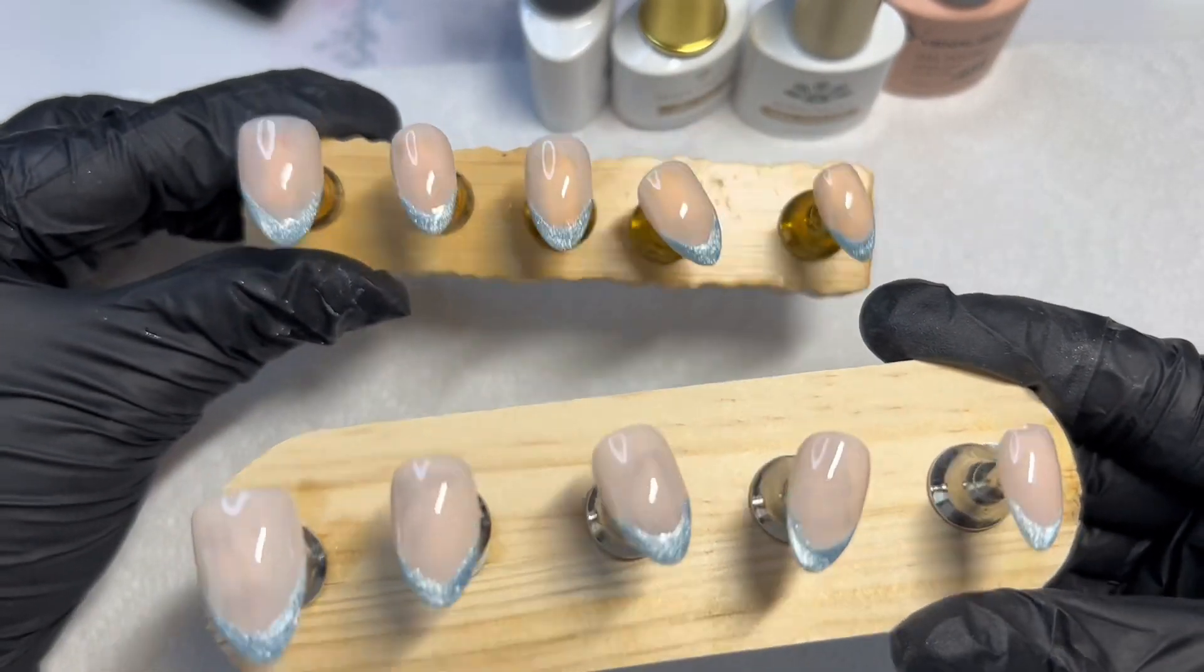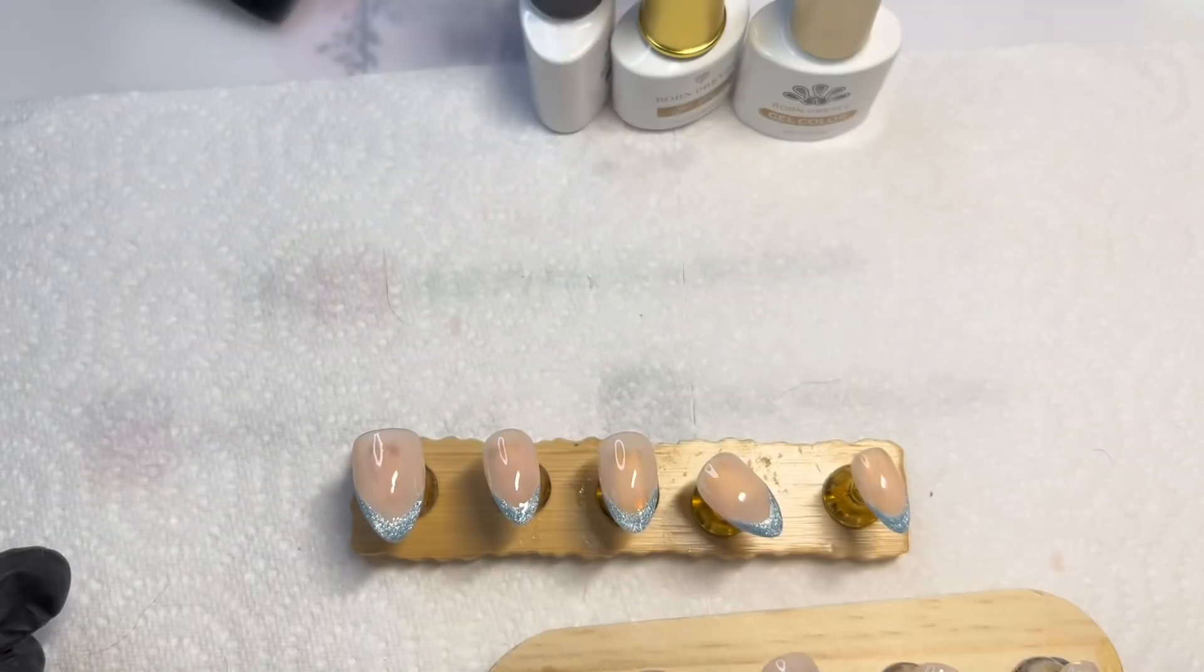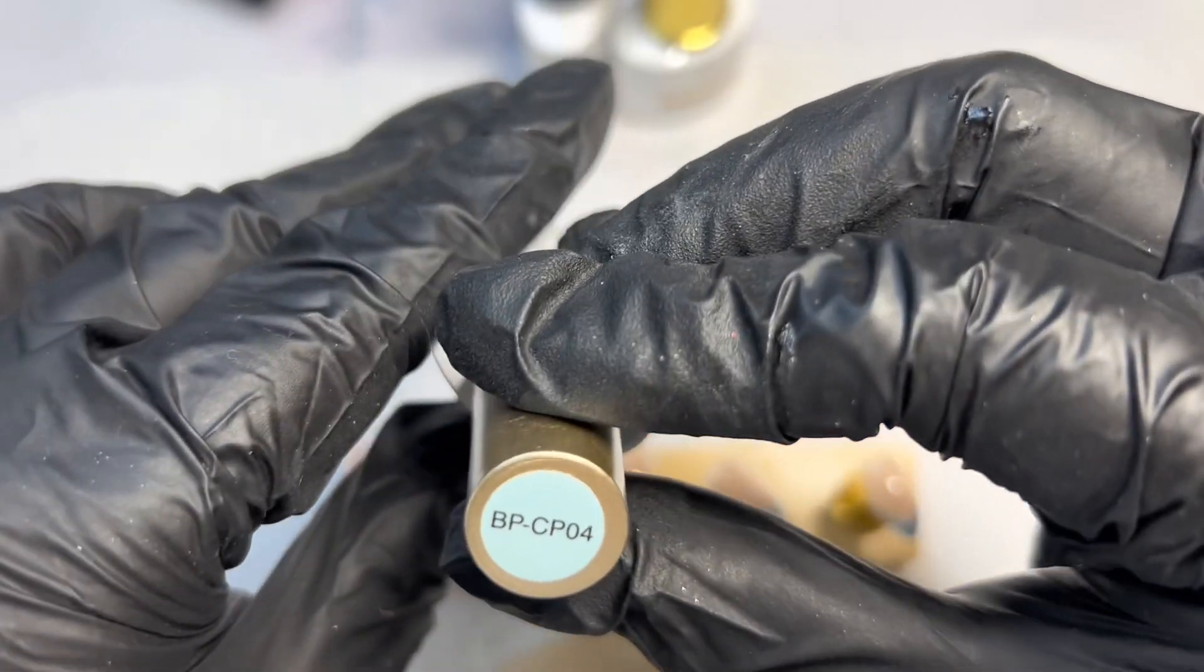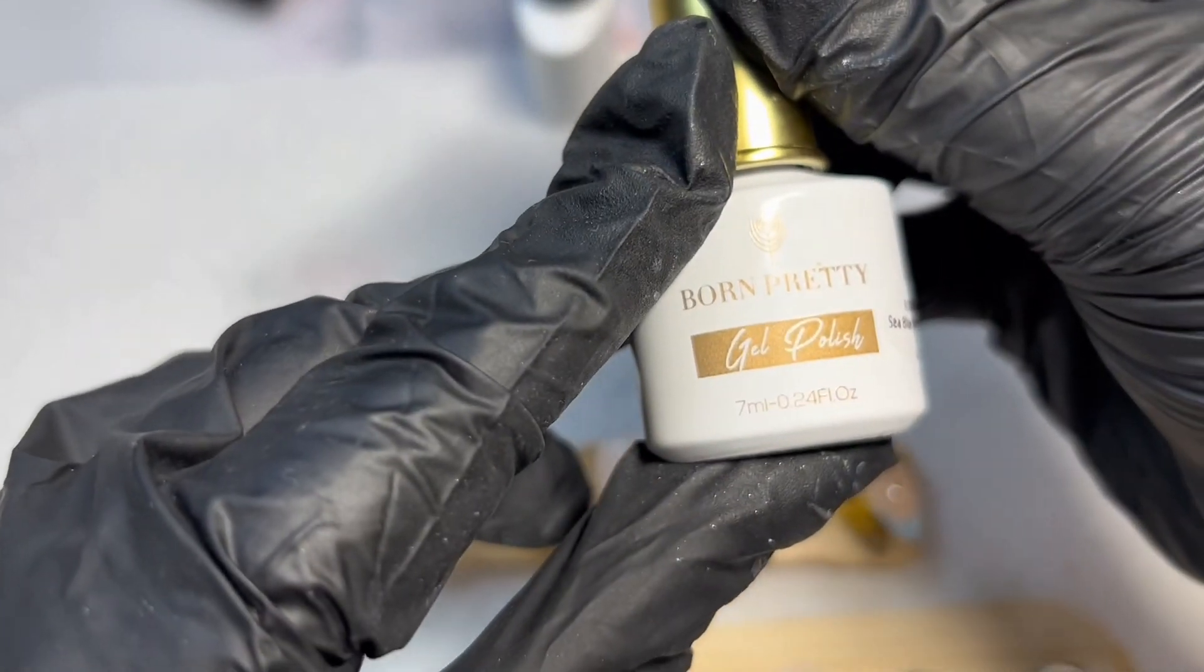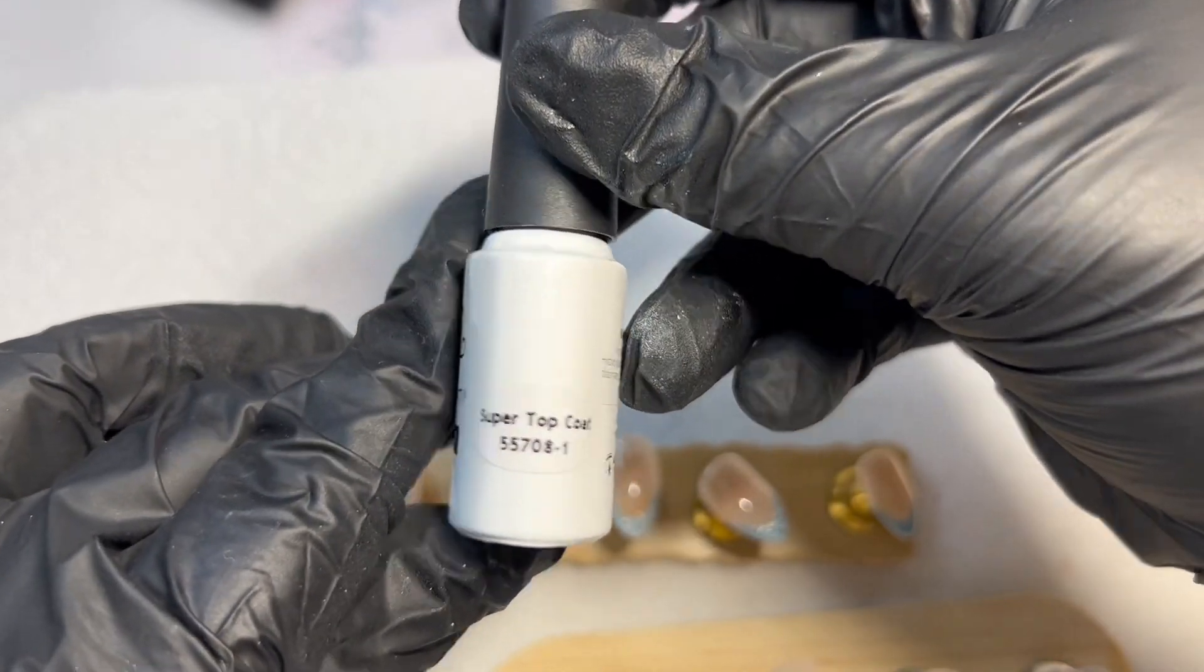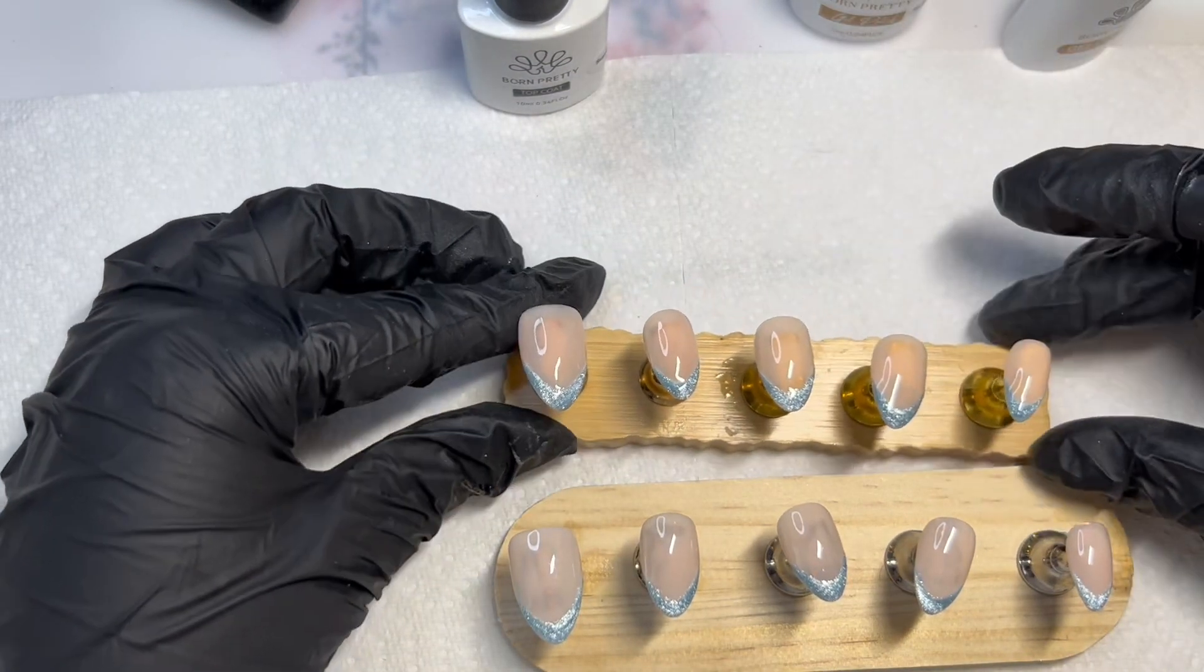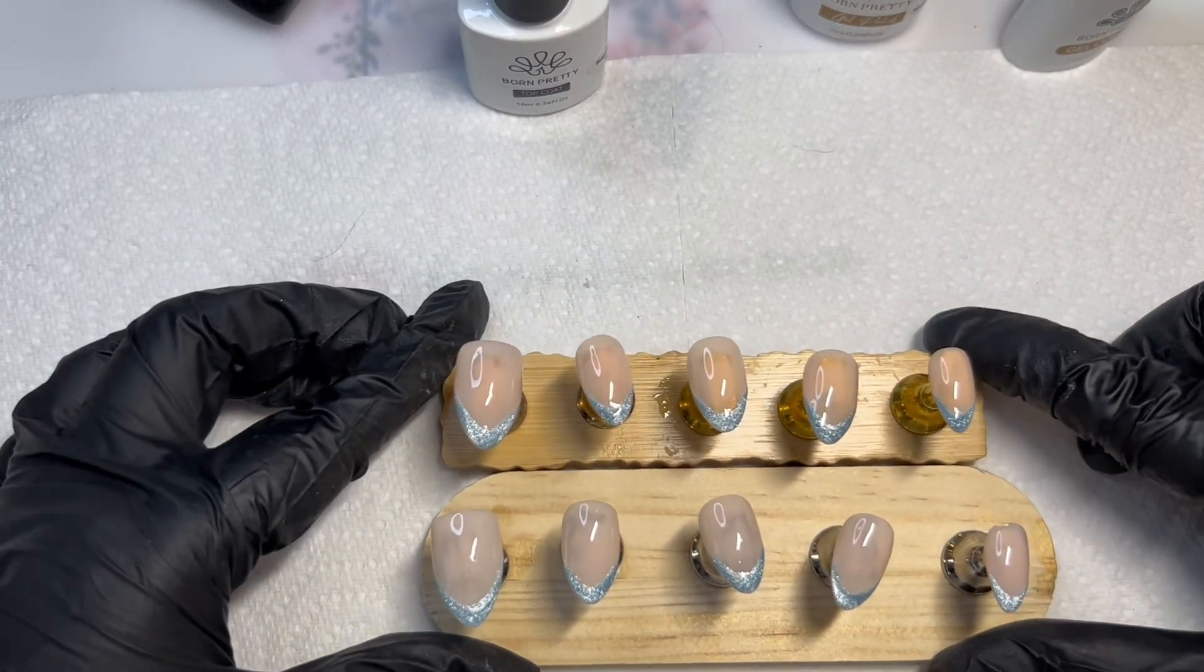Going through, we used Venalisa number 52, Born Pretty BPCP04 for that blue color, the cat eye was the sea blue cat magnetic, and the Born Pretty top coat. I will leave all the links and description of the products down in the description box or in my comments.